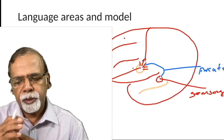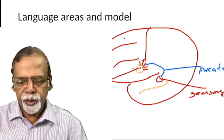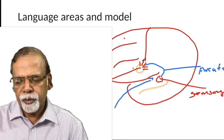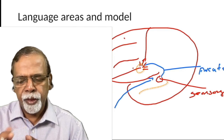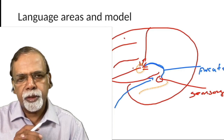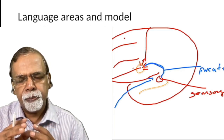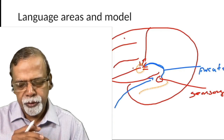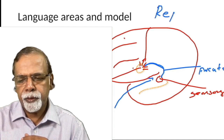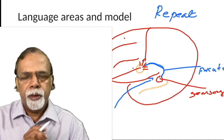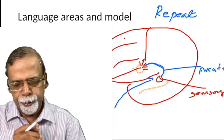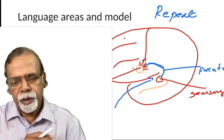Suppose you want to repeat something. The sound reaches Heschl's gyrus, goes to Wernicke's area where it gets meaning, and from there the impulse goes to Broca's area, which stimulates the appropriate muscles so that vocalization occurs. This circuit is required for repetition, so aphasia where repetition is impaired occurs when this circuit is affected.